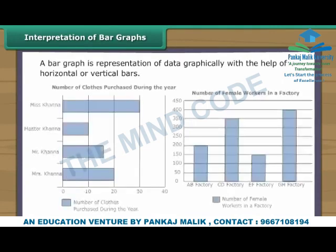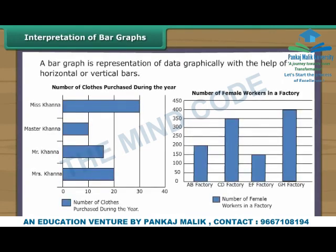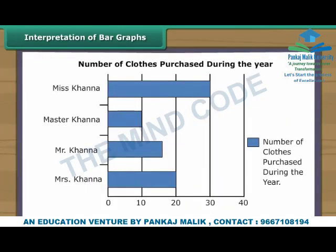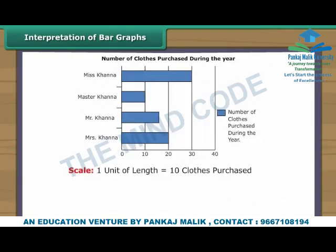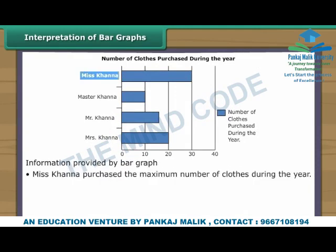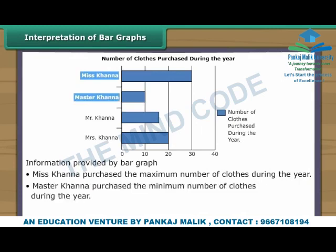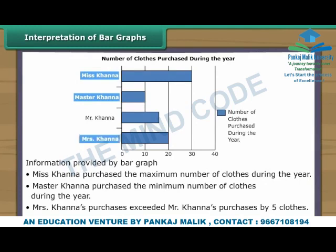Interpretation of bar graphs. A bar graph is a representation of data graphically with the help of horizontal or vertical bars. Bar graphs are easier to draw than pictographs. Look at this horizontal bar graph. The thickness of the bars and the gap between the bars are identical. It shows details of clothes purchased by members of the Khanna family during the year; one unit of length represents 10 clothes purchased. Ms. Khanna purchased the maximum number of clothes, Master Khanna purchased the minimum, and Mrs. Khanna's purchases exceeded Mr. Khanna's by 5 clothes.